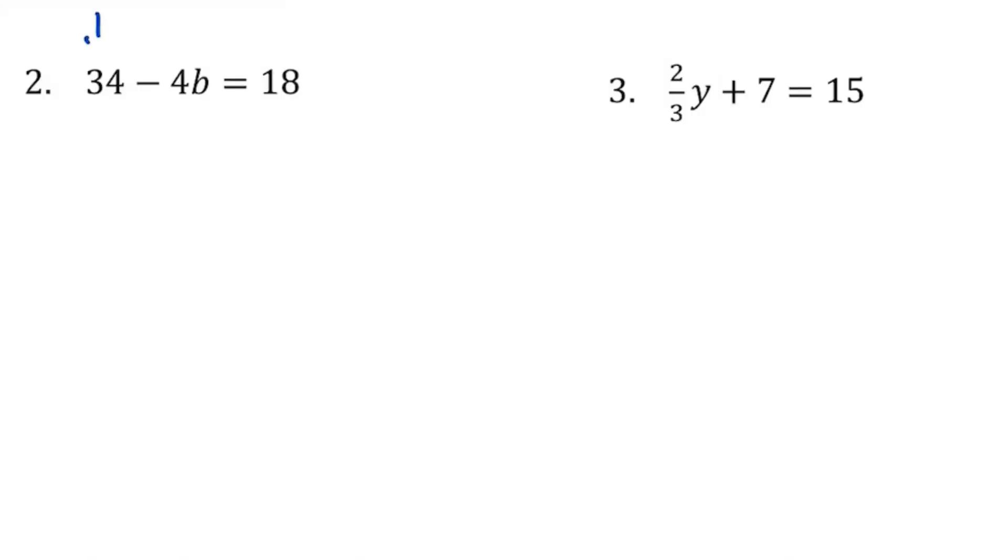Question number 2: I need to get rid of this first, so I'm going to subtract 34 from both sides. When I do that, I have negative 4b equals negative 16, and then I'm going to divide both sides by the coefficient there, and I'm left with b equals positive 4.